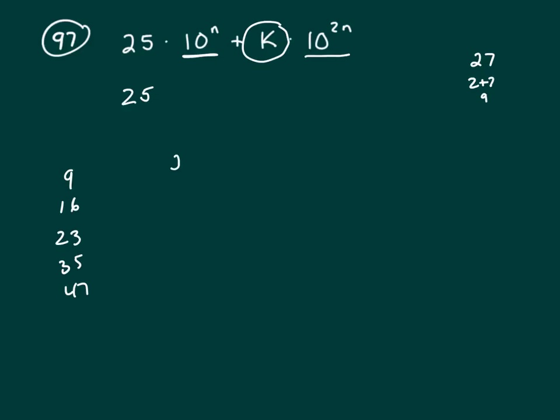So if K is 9, the only digits in my big number, you'll have a 25 and you'll have some zeros, however many, then you're going to have a 9 and some zeros. I'm not sure how many, but when you sum up the digits, you're just summing up the 25 and the 9. All the rest of them are zeros.